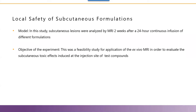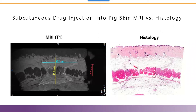The third model: testing local subcutaneous safety tolerability of a drug. In this model, a drug was administered continuously for 24 hours using infusion pumps attached to the back of pigs. The objective was to test the feasibility of ex vivo MRI for locating and measuring the size of the subcutaneous toxic effect. Biopsies taken from the sites of subcutaneous injection were scanned by MRI. There is complete correlation between the form, size, and location of the affected areas when comparing the ex vivo scans to histopathology.